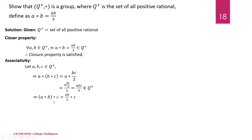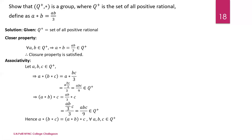Now the right-hand side: (a star b) star c. Here a star b equals ab/3, so (ab/3) star c equals (ab/3) into c divided by 3, which gives abc/9. Since both sides equal abc/9 and the result belongs to Q+, associativity property is satisfied.